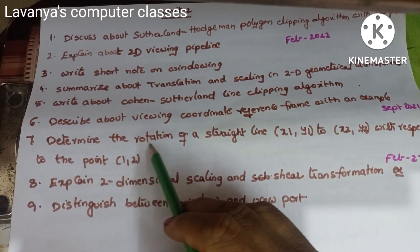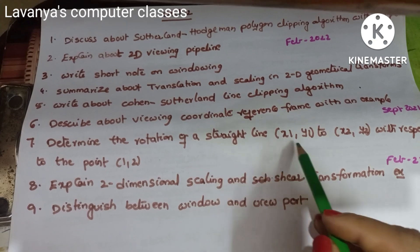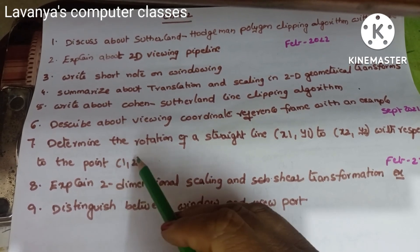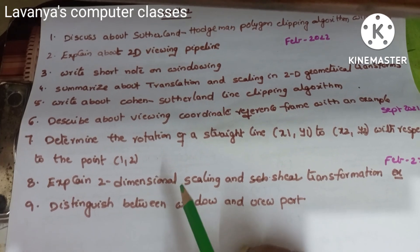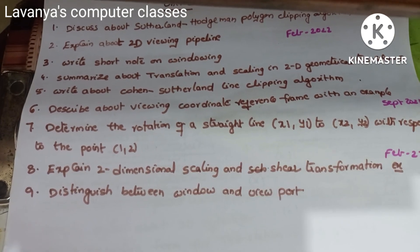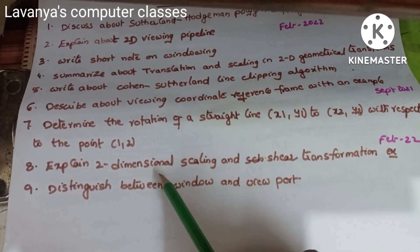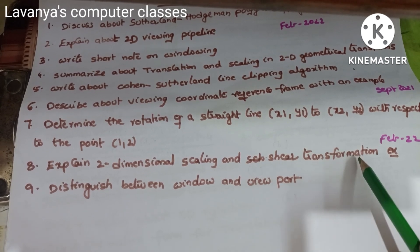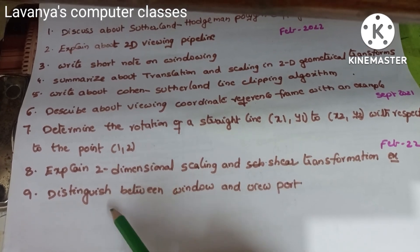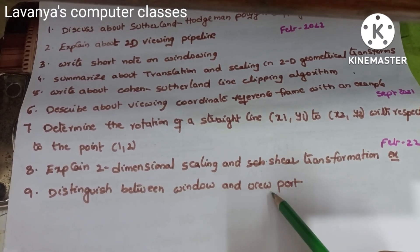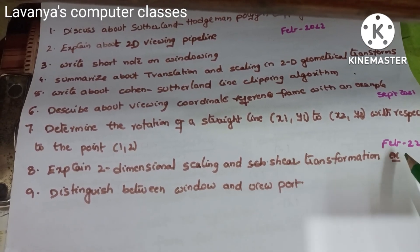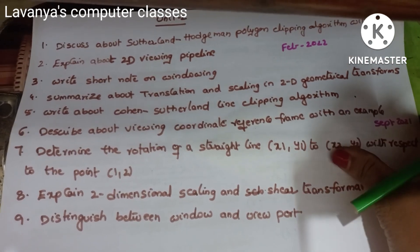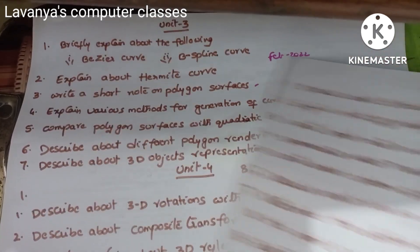Next, determine the rotation of a straight line from point (x1, y1) to (x2, y2) with respect to the point (1, 2) — this is a problem-oriented question. Also, explain two-dimensional scaling and shear transformations, and distinguish between window and viewport. These questions came in February 2022. These are the important questions in Unit 2.